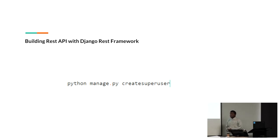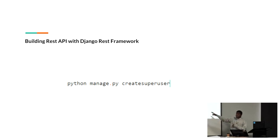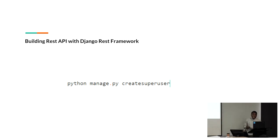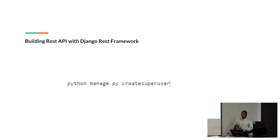The Django framework provides an admin panel where we can interact with our data. For example, I have created the basic model there. If you want to insert data using that model, I can use the admin panel. But before I do that, I have to create a user. I use python manage.py createsuperuser. It will prompt you for the username, then the email address, then the password and repeat password. Then it will confirm that the super admin user has been created.